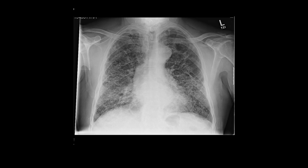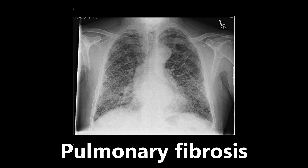Here we have a chest x-ray that is severely abnormal — this is an example of pulmonary fibrosis. What we're seeing is a bilateral and diffuse pattern of small reticulonodular opacities, seen primarily in the lower lobes. These opacities represent damage to the lungs. Pulmonary fibrosis is a scarring of the lung that can cause significant respiratory issues. If you see a chest x-ray like this, highly abnormal, think pulmonary fibrosis.